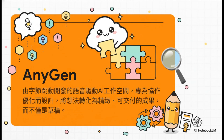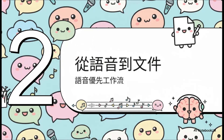Anygen是字节跳动做的一个用声音来驱动的AI工作空间，但千万别以为它只是那种按一下就生出文章的玩具。它的核心概念是协作跟优化，目标是当你的伙伴，陪着你把脑子里那些零碎的想法，一步一步打磨成一份可以直接交给老板、交给客户的完美成品。